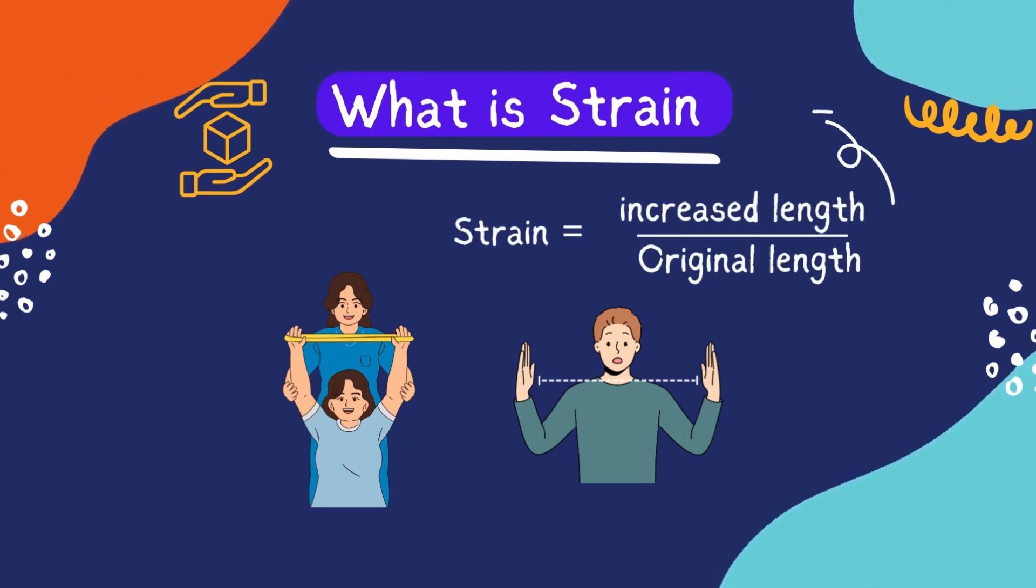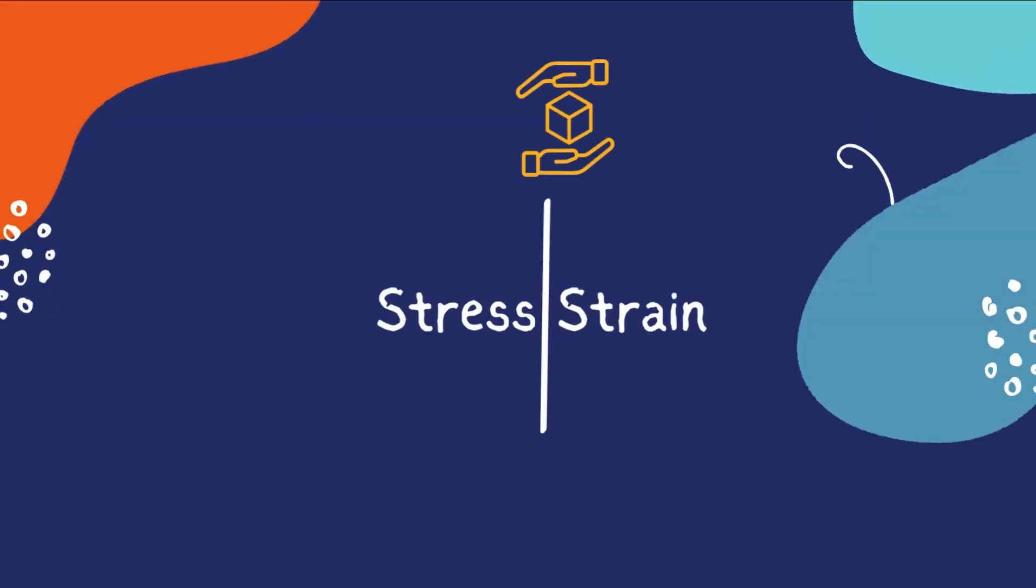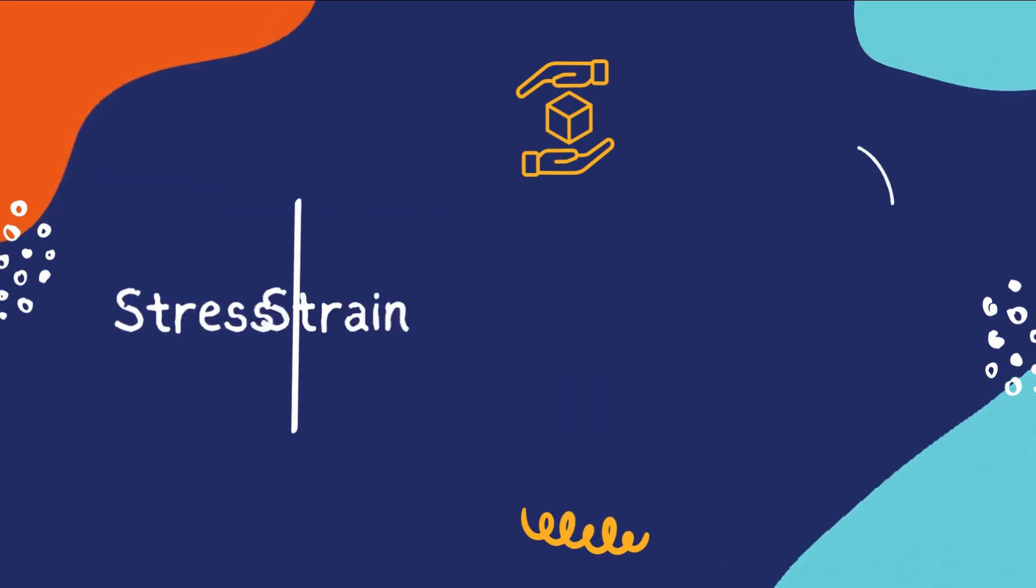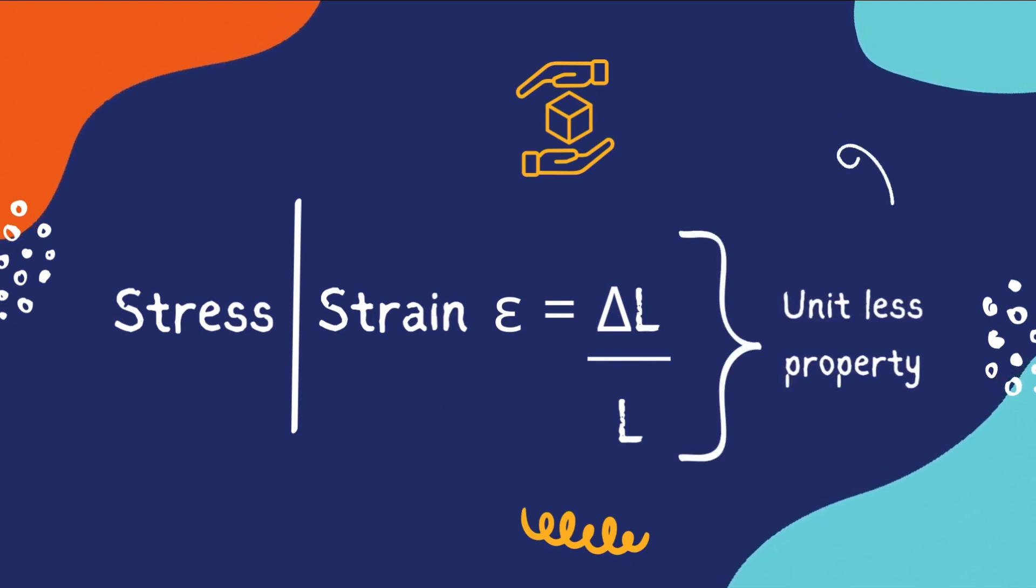So basically, we can say that strain explains the change in the shape of the object or deformation due to the load or force being applied onto it. Mathematically, we can express strain as epsilon equals delta L divided by L. Now it's a unitless property, meaning it does not have any unit. It is a dimensionless quantity.